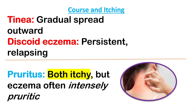Tinea slowly spreads outward as the fungus grows. Discoid eczema tends to persist in one place for weeks and relapses often. Both itch, but eczema's itch is usually more intense and chronic.